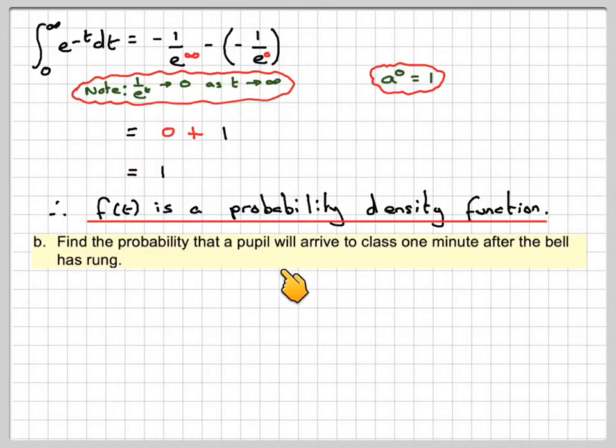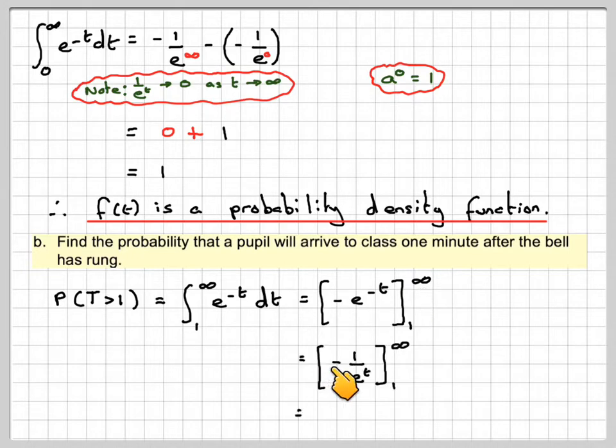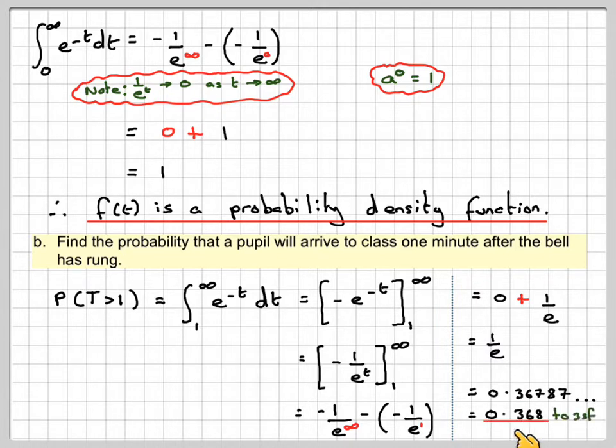Find the probability that a pupil will arrive to class one minute after the bell has rung. So the probability of t being greater than one is the integral from one to infinity of e to the minus t dt. If we integrate again, we're going to get minus e to the minus t from one to infinity. So we're going to get minus one over e to the t from one to infinity. Substituting in, minus one over e to infinity is zero minus one over e, which gives zero plus one over e. And if we calculate one over e, we get 0.36787, which is 0.368 to three significant figures.